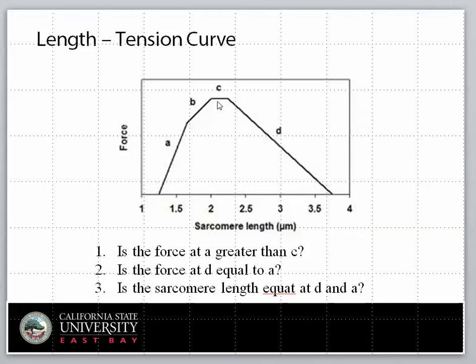You see it's an interesting relationship — it's not linear. It's actually an inverted U. So as length increases, so does force, up to a peak. That peak is the optimal length of a sarcomere, around 2 to 2.25 microns. And then as the length continues to increase, the force production of the sarcomere decreases.